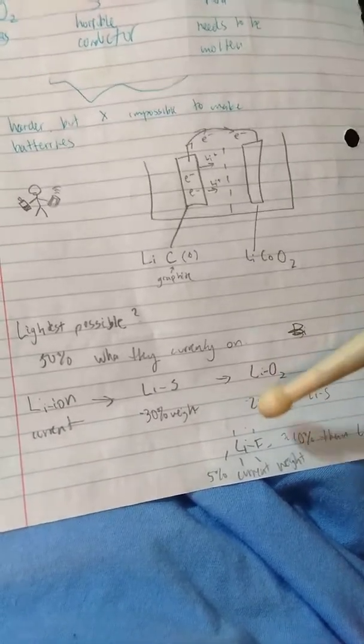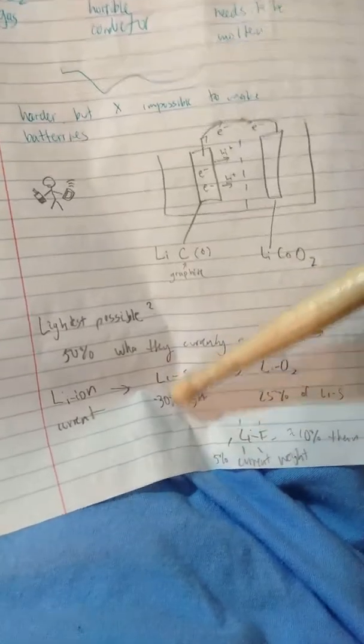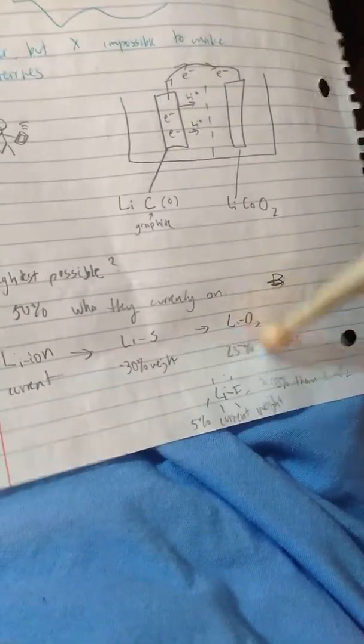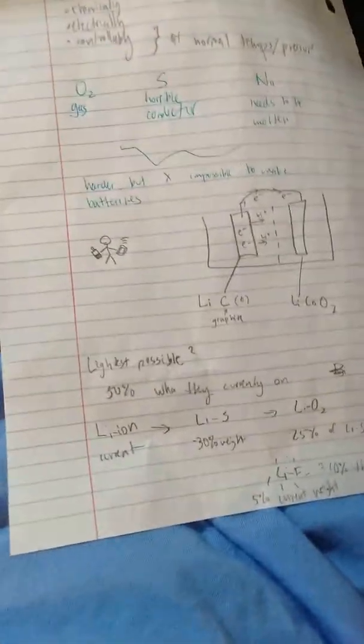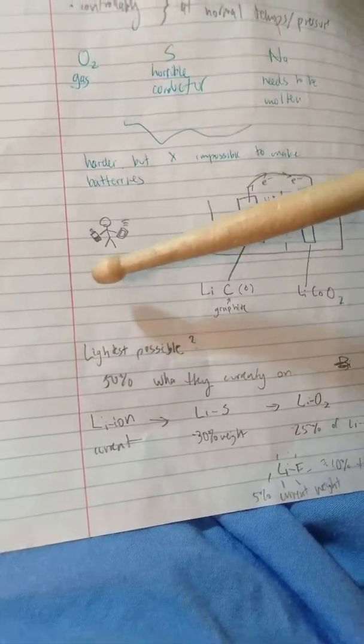Next is lithium oxide—this is 25% the weight of this right here, and this is still in development too. Last one is lithium fluoride, which is 10% the weight, or 5% of the current weight of a lithium-ion battery.